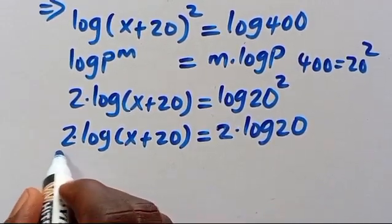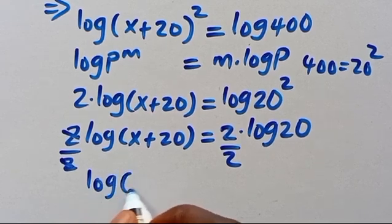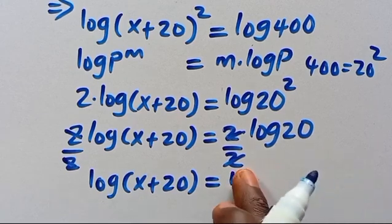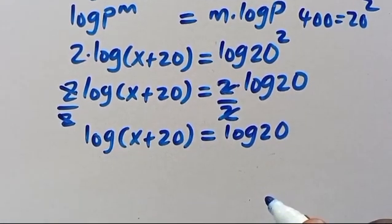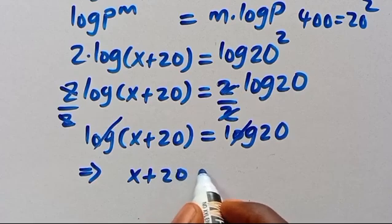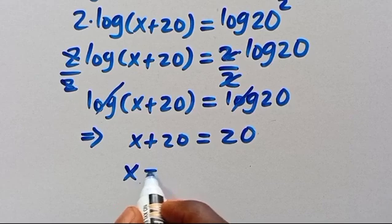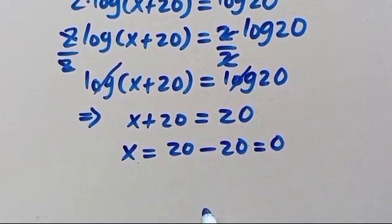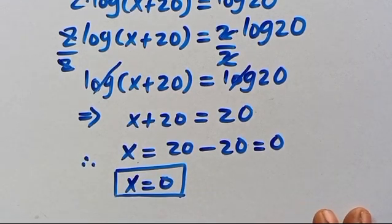Dividing by 2 on both sides, the 2s cancel out. We have log(x+20) = log 20, so x+20 = 20. Collecting like terms, x = 20-20 = 0. Finally, x = 0 when we use method 1.